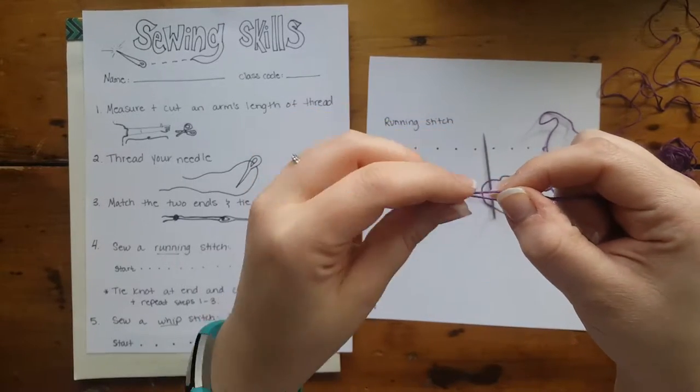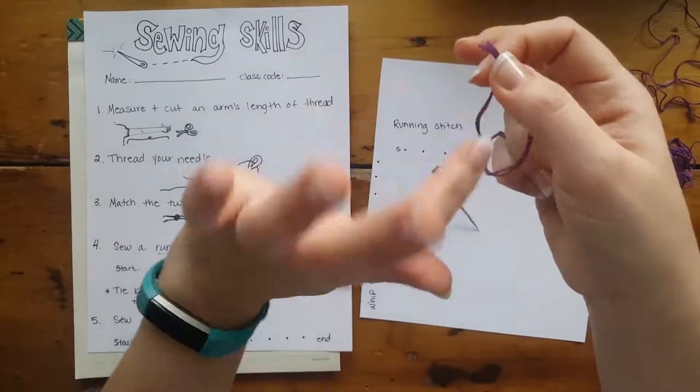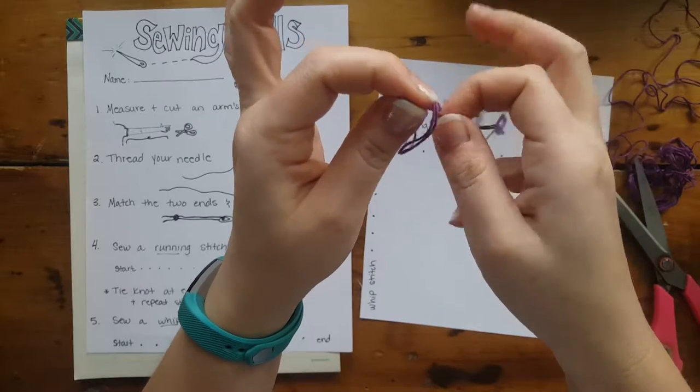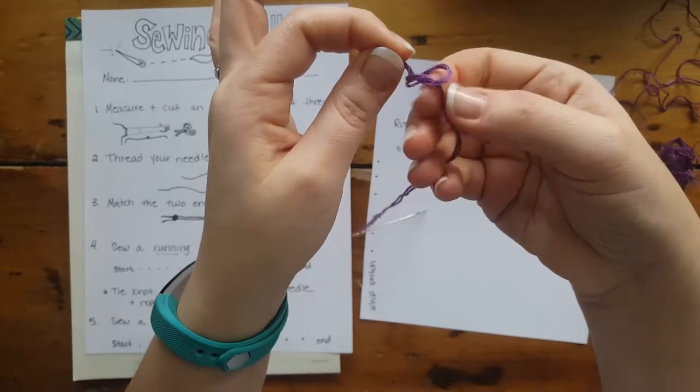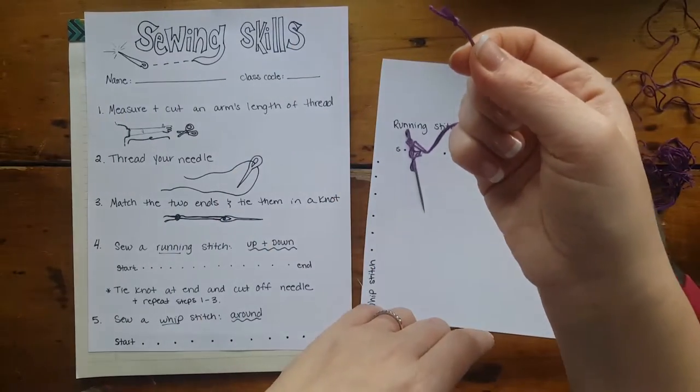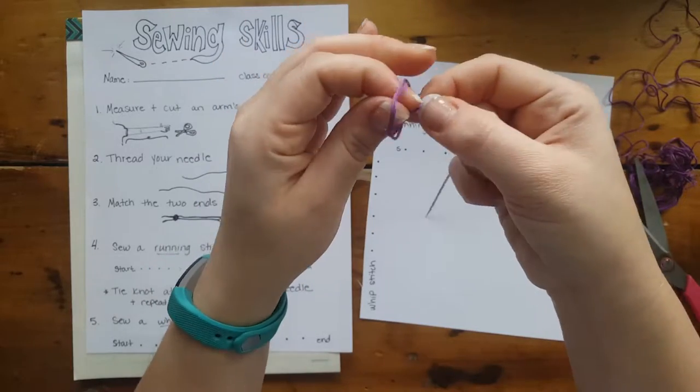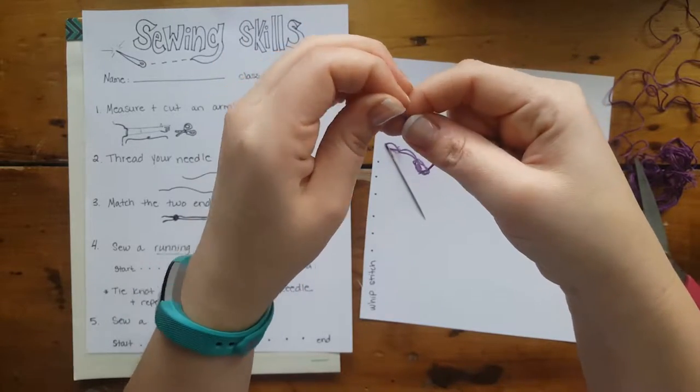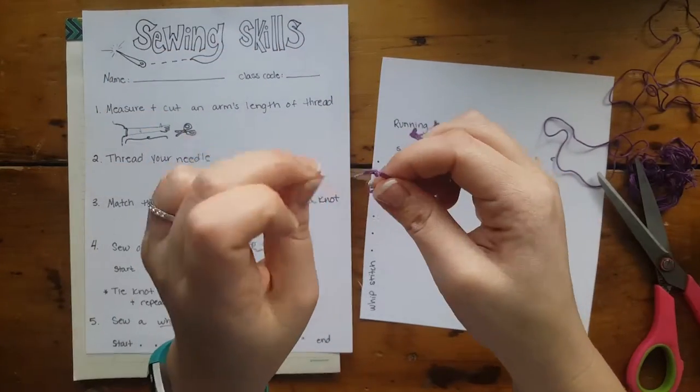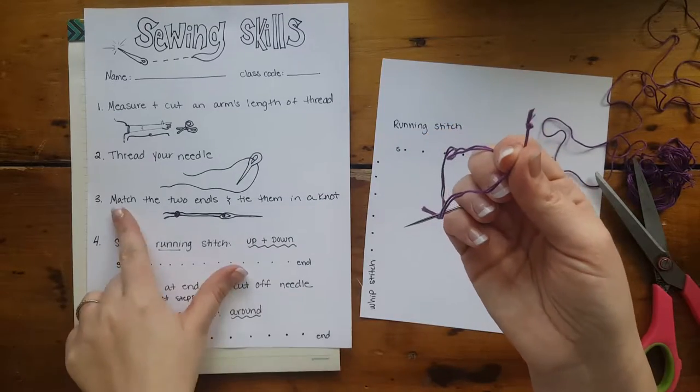Knot tying can be a little tricky. There are a few different ways to tie a knot. One is to grab a loop here, pull this end through, and use my other fingers to scrunch up to the end. That gives you a single knot. If you want to, you could repeat that a second time for a bigger knot. We're just sewing through paper today, so it doesn't have to be a very big knot. That was step three.